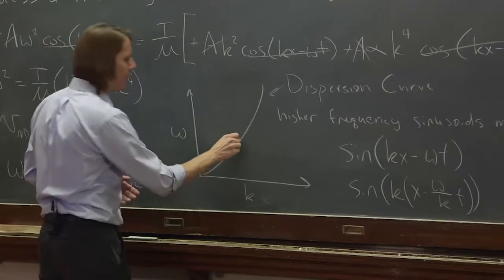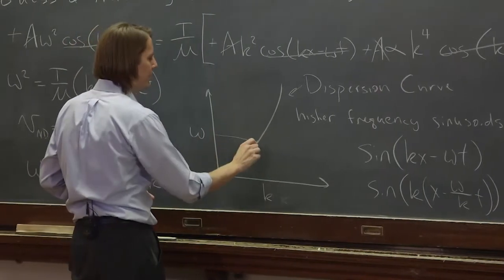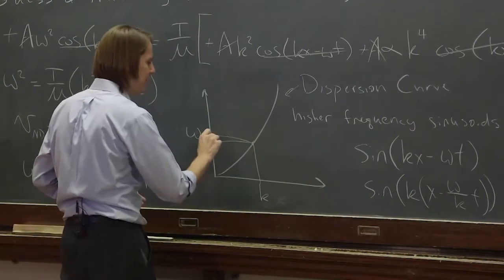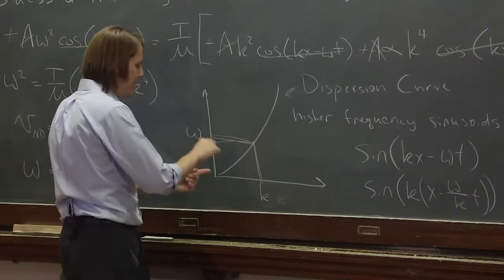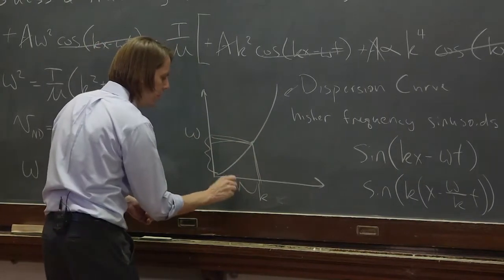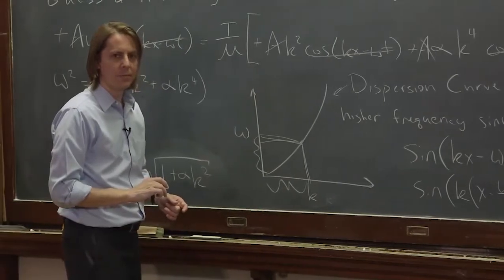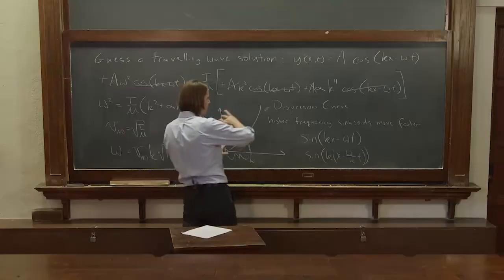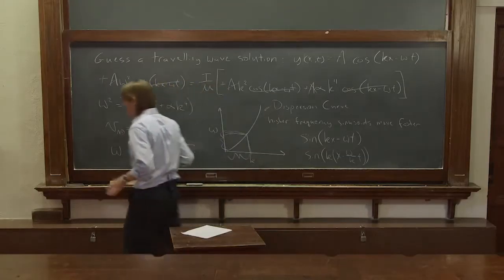ω over k is how fast any single sinusoid goes. If I put a sinusoid here and say, here's ω, the dispersion curve tells me it's going at this k, then the speed is this value ω over this value k. Okay? So to really understand dispersion curves, we need to erase all this and keep going.